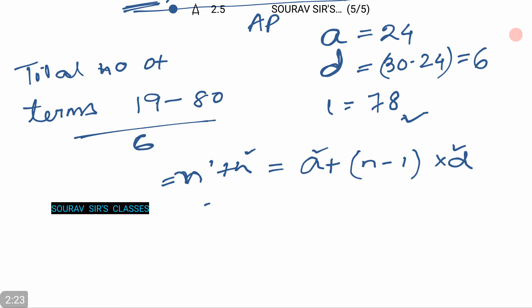So by putting the value, 78 equals 24 plus N minus 1 into D, that is 6. So by this equation we can get the value of N, that is 78 minus 24 by 6 plus 1, that is 54 by 6 plus 1.